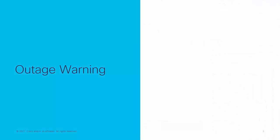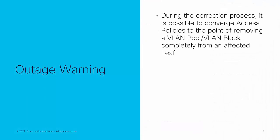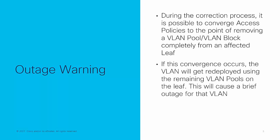Outage Warning. During the correction process, it is possible to converge access policies in such a way where a VLAN pool VLAN block combination is completely removed from an affected leaf. The moment this occurs, any VLAN referencing the base value which was removed will be reprogrammed, resulting in a brief outage.